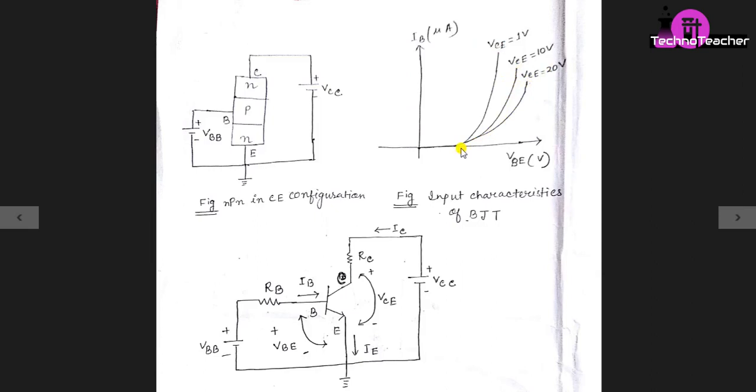This is because this base-emitter junction, that is input terminal, is forward bias. And the second thing is as we increase the value of VCE, IB will decrease.